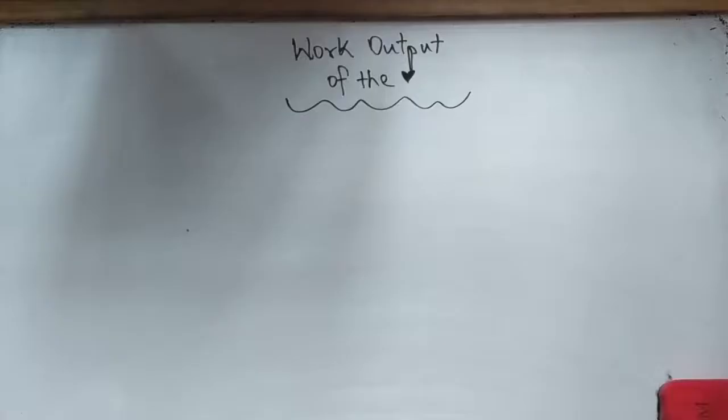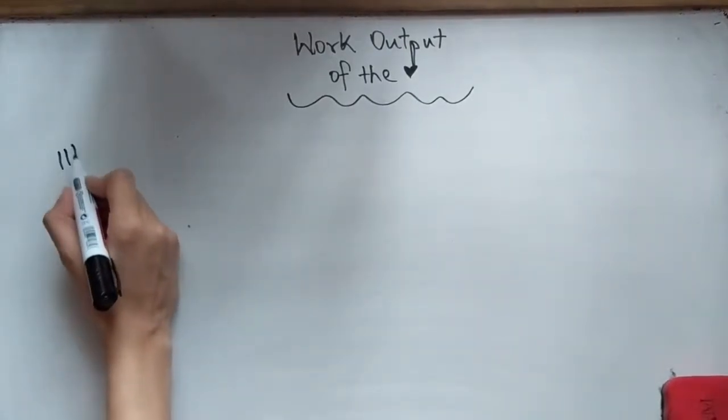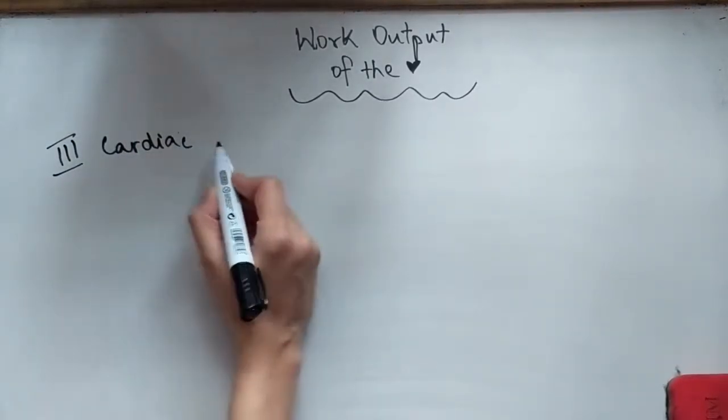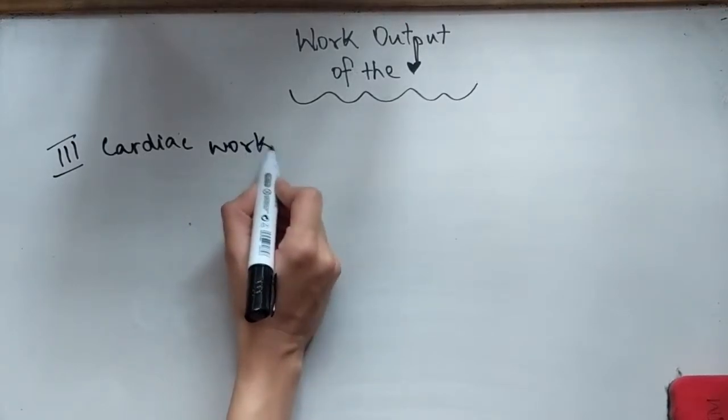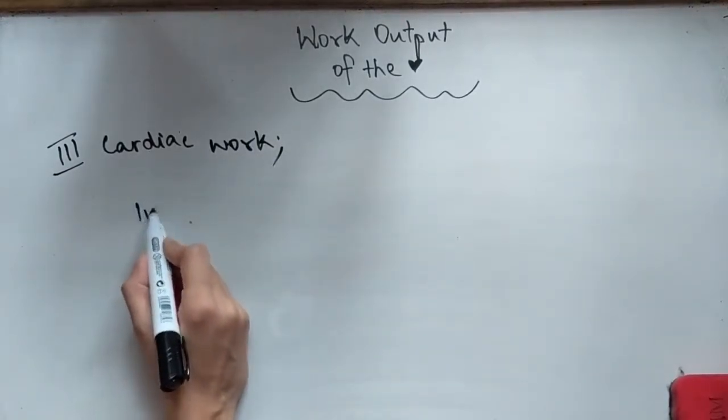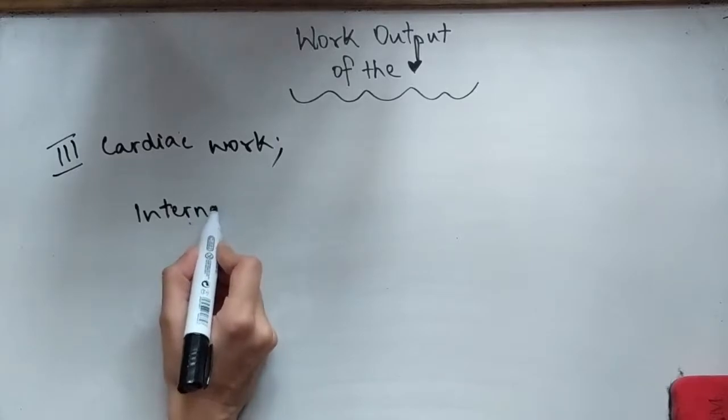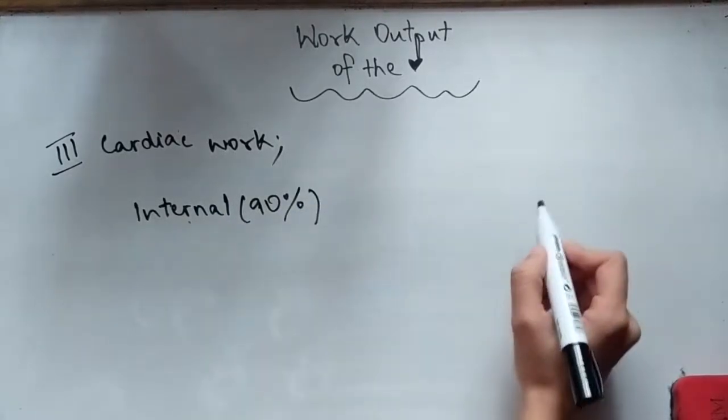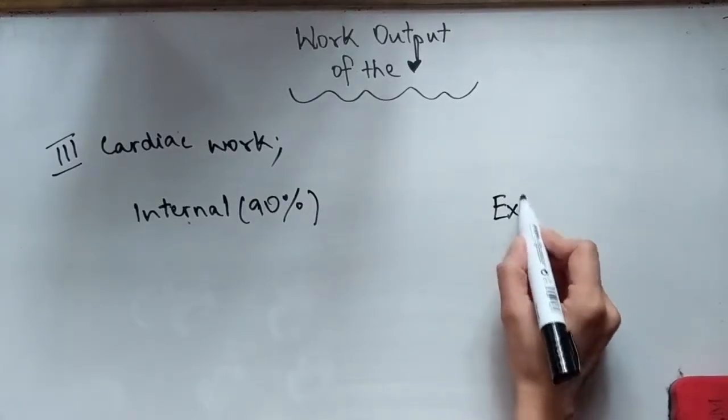Now we will speak about the last part of the video, which is the cardiac work. The heart performs work when it moves blood from the veins to the arteries. It performs two kinds of work: internal and external. The internal one makes up 90% and the external accounts for the rest, 10%.